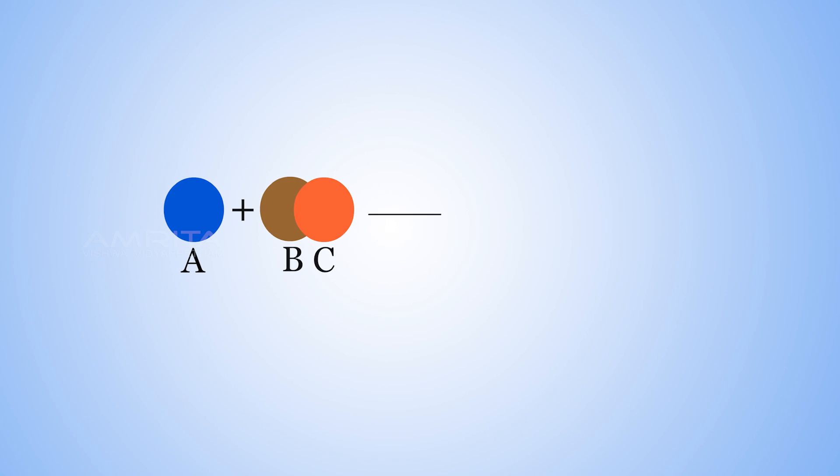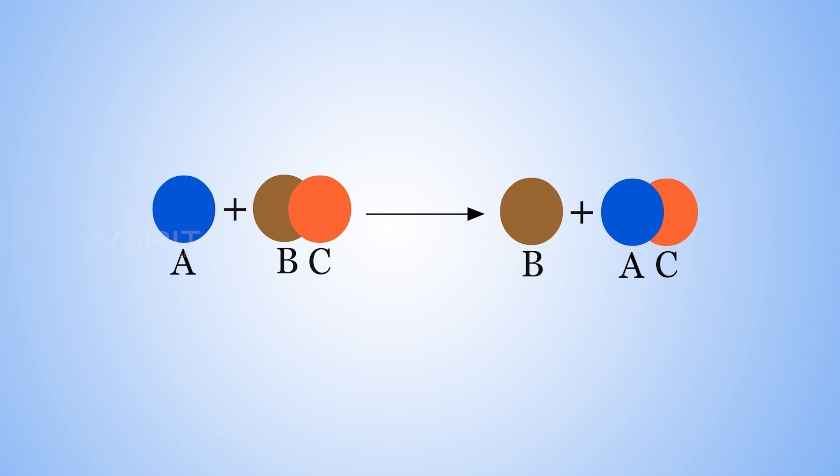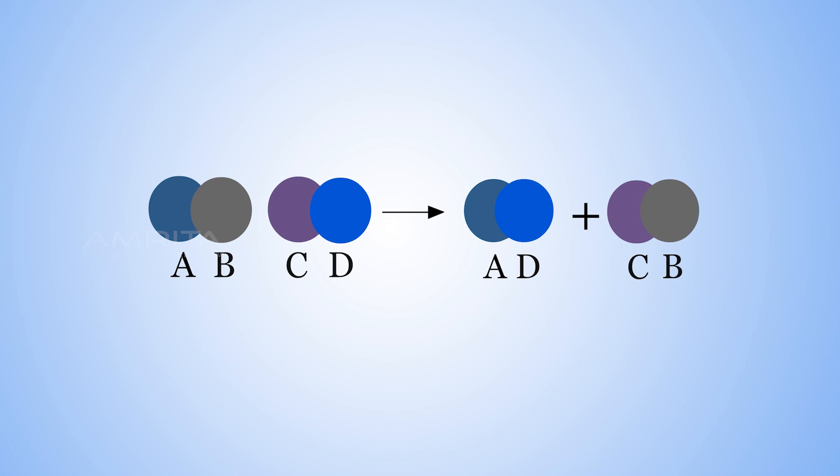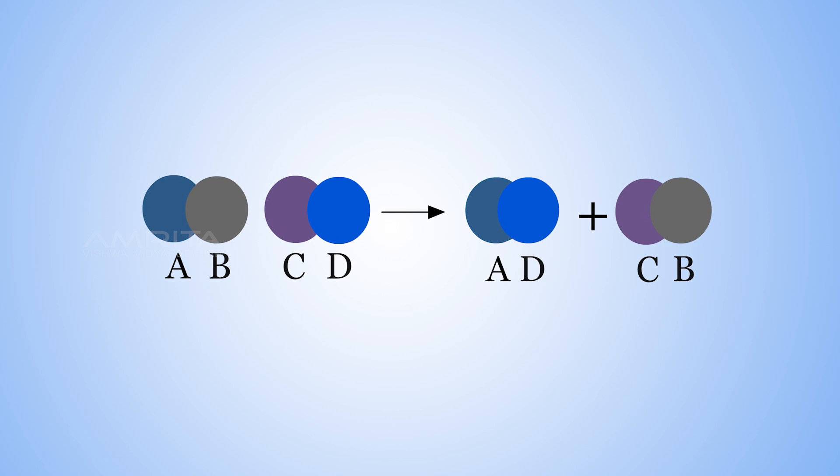The reaction in which a more reactive element displaces or removes another element to form a compound is called a displacement reaction. Reactions that involve displacement of two different atoms or groups of atoms by other atoms or groups of atoms are called double displacement reactions.